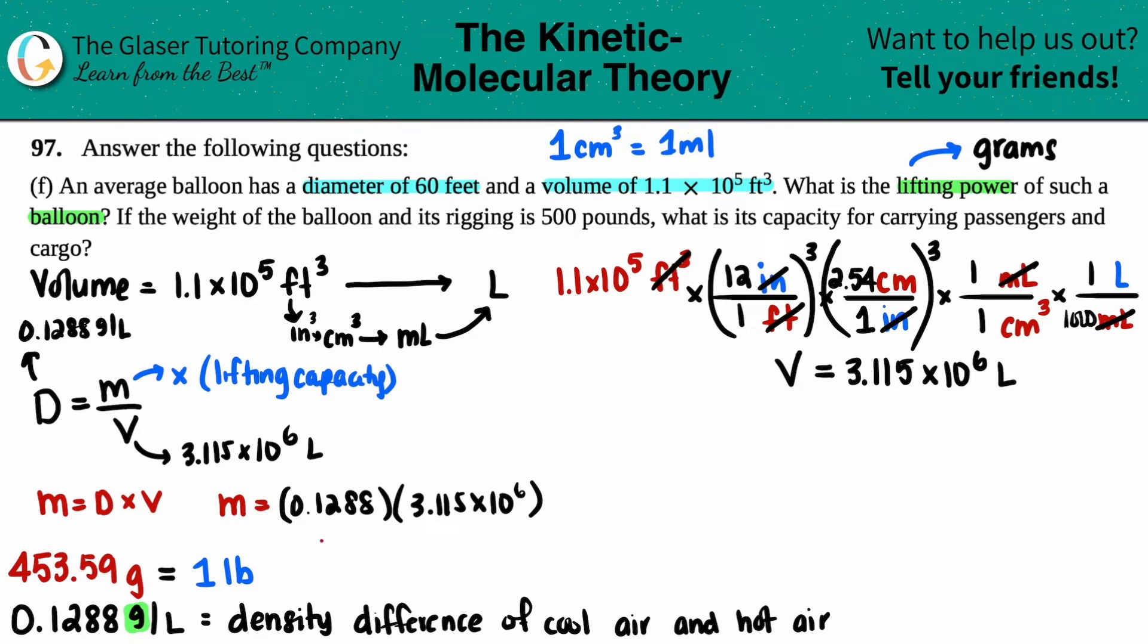Mass = 0.1288 × 3.115 × 10⁶. Calculating: 3.115 × 10⁶ × 0.1288. With two sig figs, that's 4.0 × 10⁵ grams. That's your lifting power of the balloon.